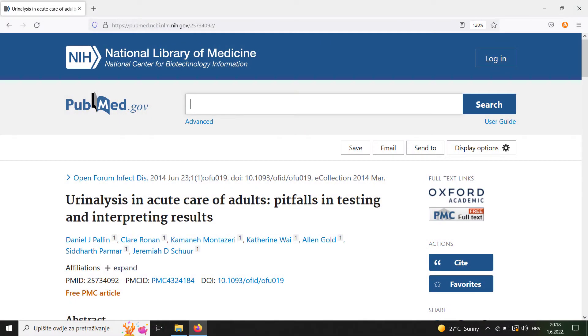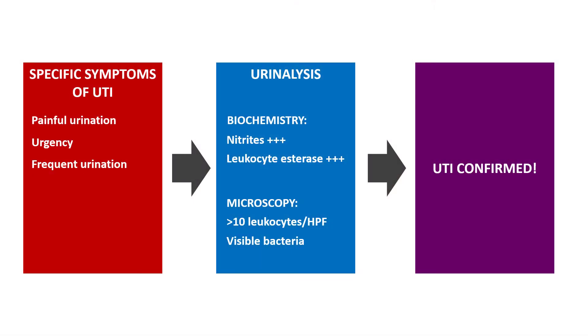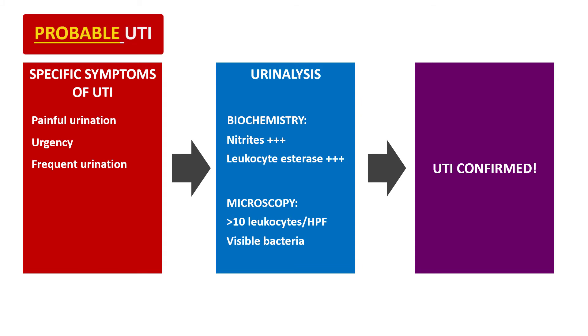What we do have is a common sense approach that can help us a lot. I highly recommend you take a look at the articles included in the description of this video — they nail the problem and offer a brilliant, simple solution. It will not be 100% accurate, but it will definitely improve our approach to patients with suspected urinary tract infections. Here is the shortened version: if the patient presents with typical symptoms of a UTI and you find leukocytes and bacteria in their urine sample, this is a no-brainer — in all likelihood, this really is a urinary tract infection.